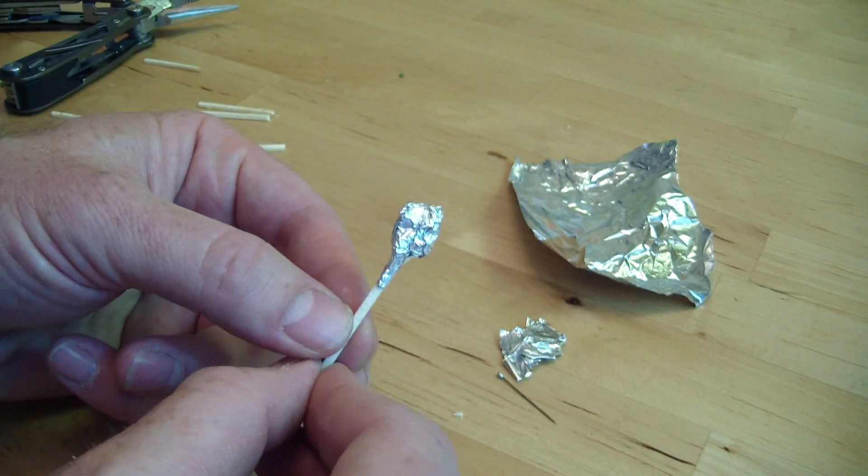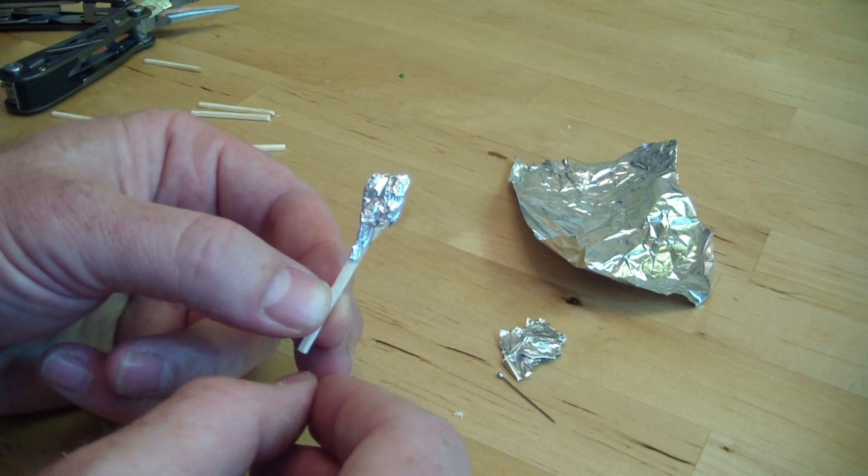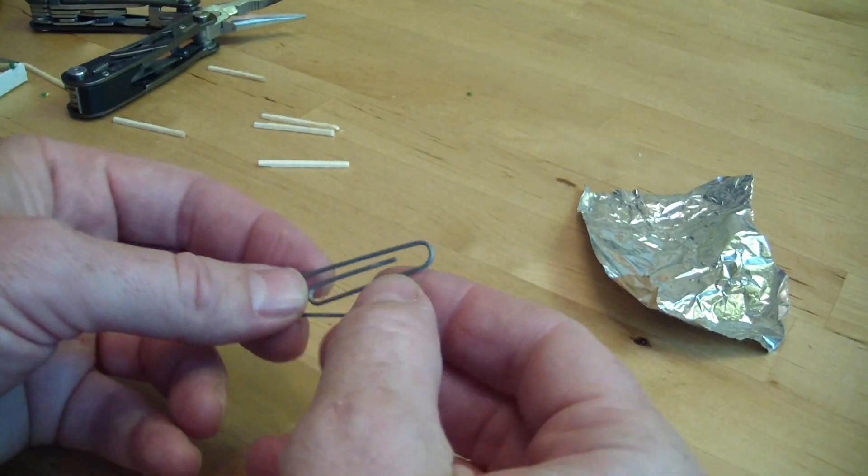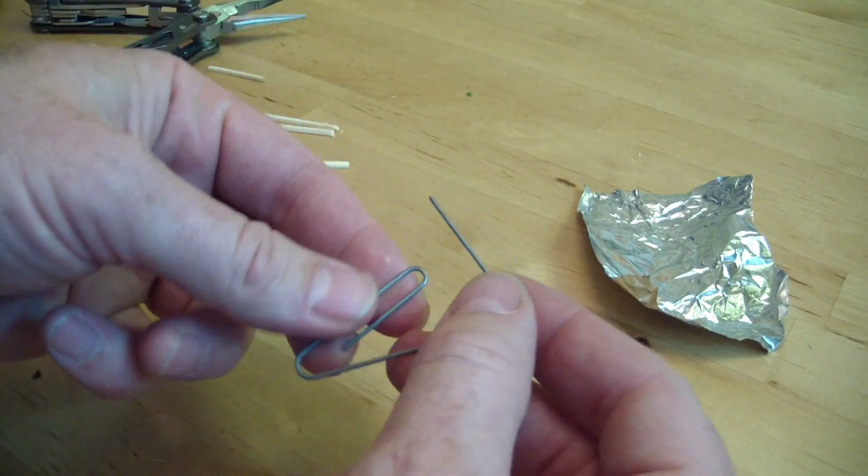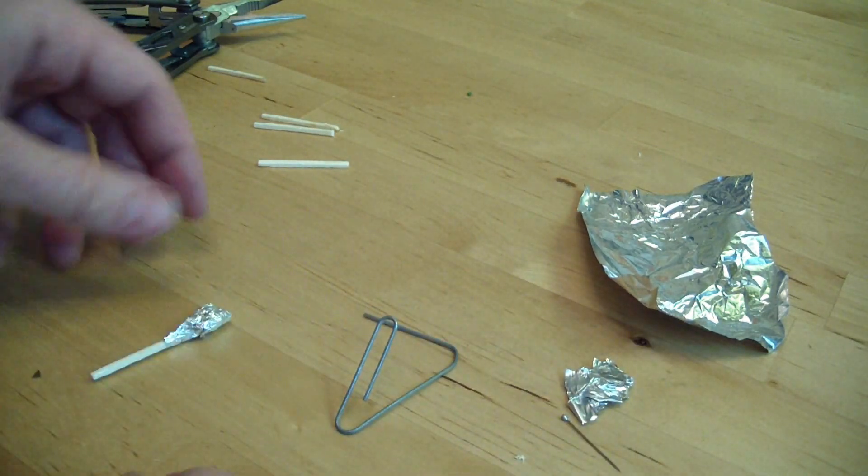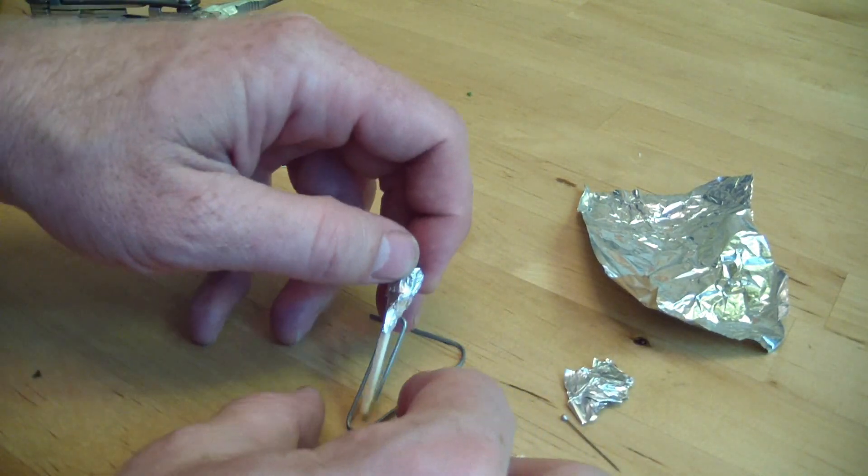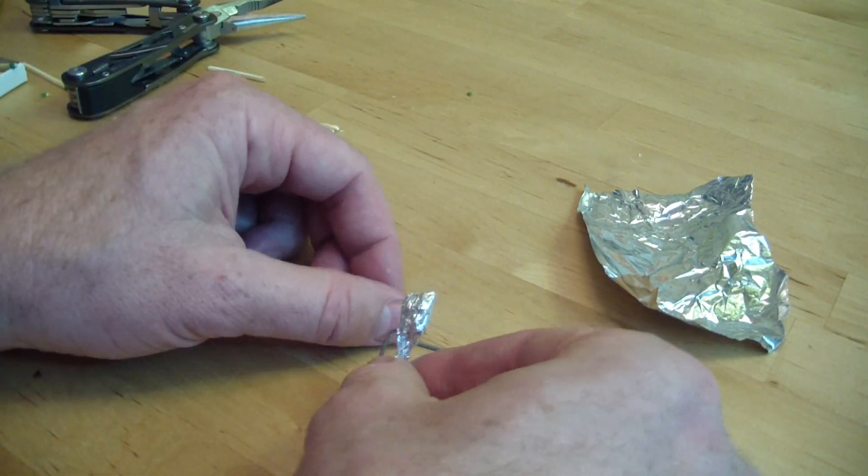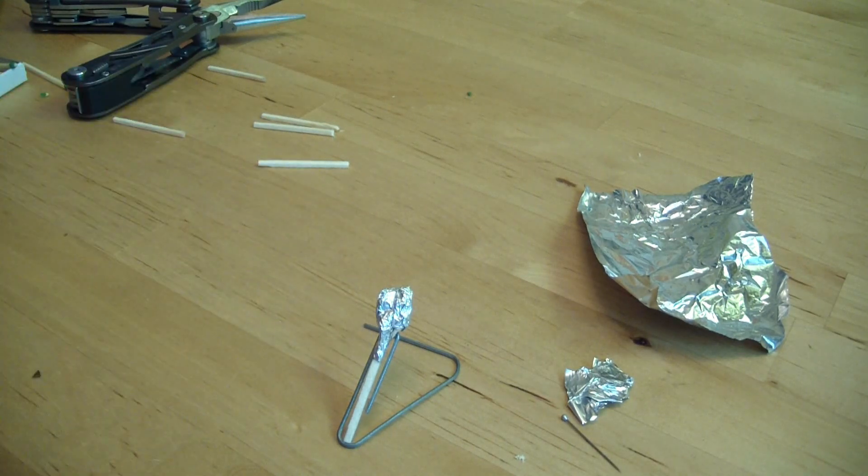And then we'll prop it up on a paper clip out in the front yard, fire it off, and see what kind of distance we get. So a paper clip makes a great launch pad. You just spread out one end, and then the other end, make a triangle, bend this up, and then the rocket kind of cradles in here. And so the rocket just sits right in the crease of the paper clip there.